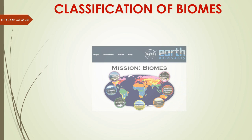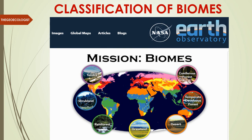Classification is the next segment of today's session. NASA has classified biomes on its Earth Observatory website, identifying seven types of biome around the world — a broader classification. These are: Tundra, Shrubland, Rainforest, Grassland, Desert, Temperate Deciduous Forest, and Coniferous Forest. You can visit their website to check this classification for yourself.